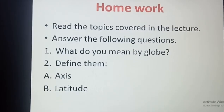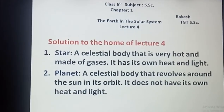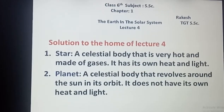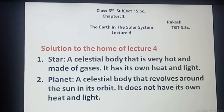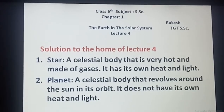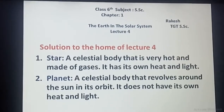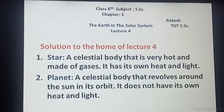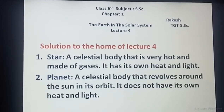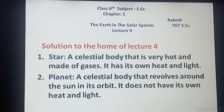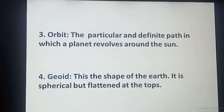Now let's go for the solution of the previous lecture — lecture number four, chapter number one: The Earth in the Solar System. Number one, Star: a celestial body that is very hot and made up of hot gases; it has its own heat and light. Planet: a celestial body that revolves around the sun in its orbit; it does not have its own heat and light. Orbit: the particular and definite path in which a planet revolves around the sun.